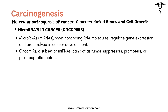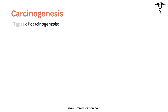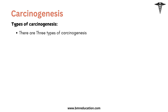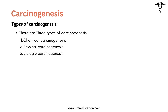We have understood the genes related to cancer and cell growth. Now we will learn about the types of carcinogenesis. There are three types: chemical carcinogenesis, physical carcinogenesis, and biologic carcinogenesis.